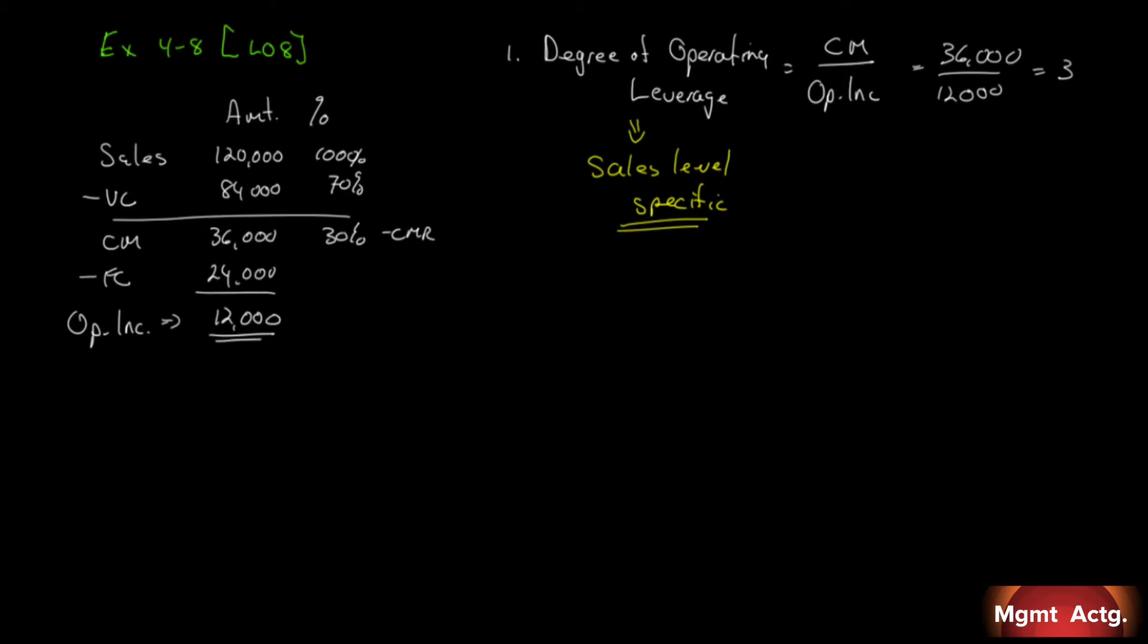Using the degree of operating leverage, estimate the impact on operating income of a 10% increase in sales. So number two says, we have an increase in sales of 10%. Therefore, we'll have an increase in operating income of, remember, we take our increase in sales multiplied by our degree of leverage, and that will be an increase of 30%. Number three says, verify your estimate from two above by constructing a new contribution format income statement for the company assuming a 10% increase in sales. So let's do that.